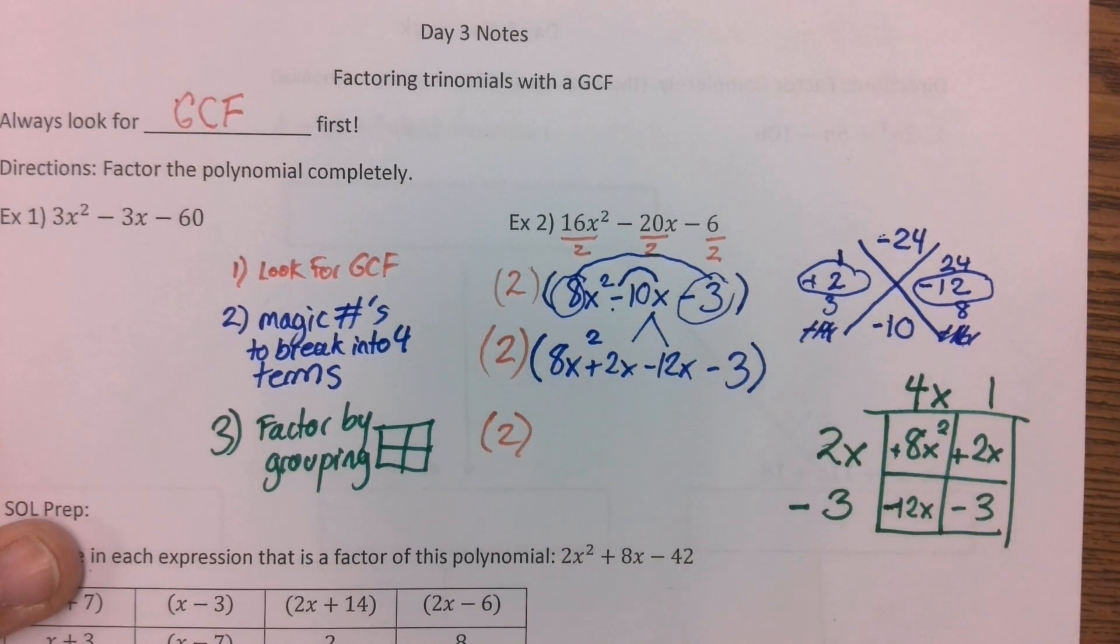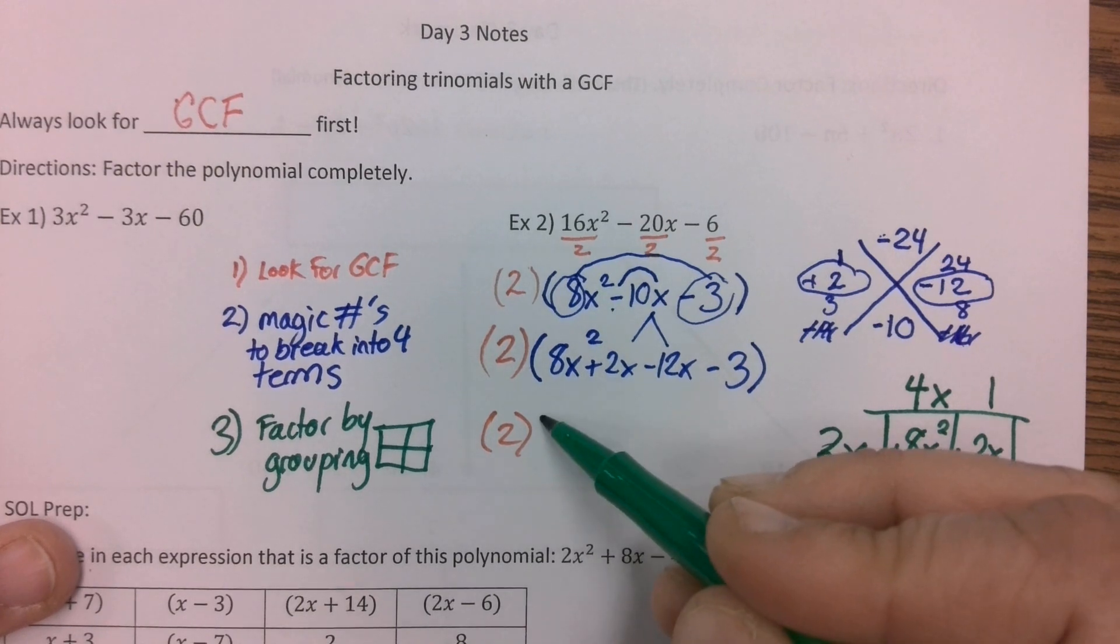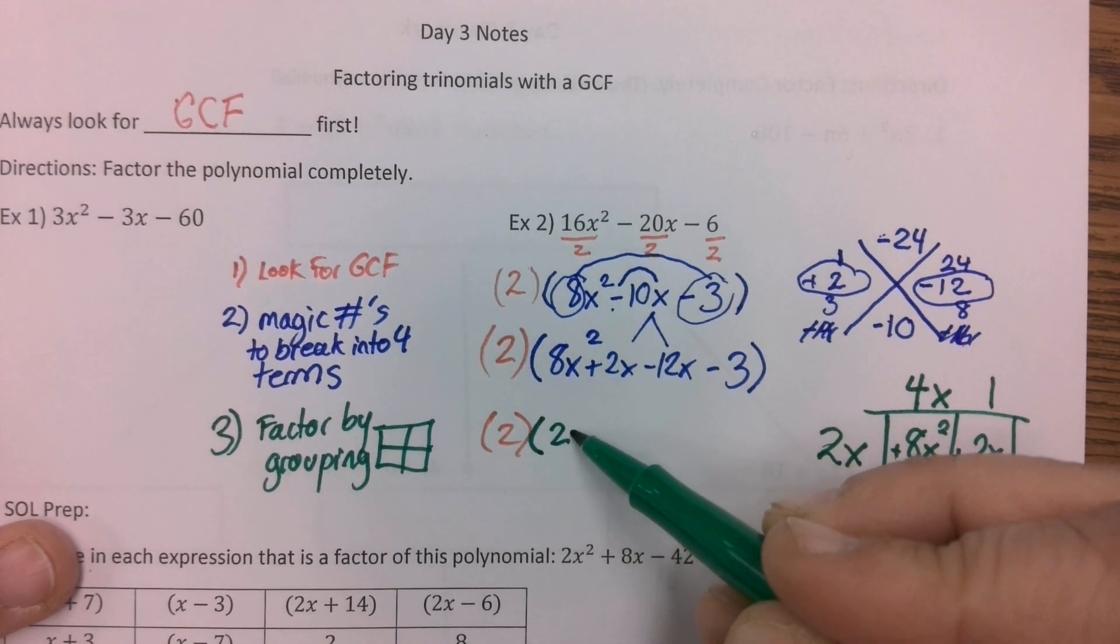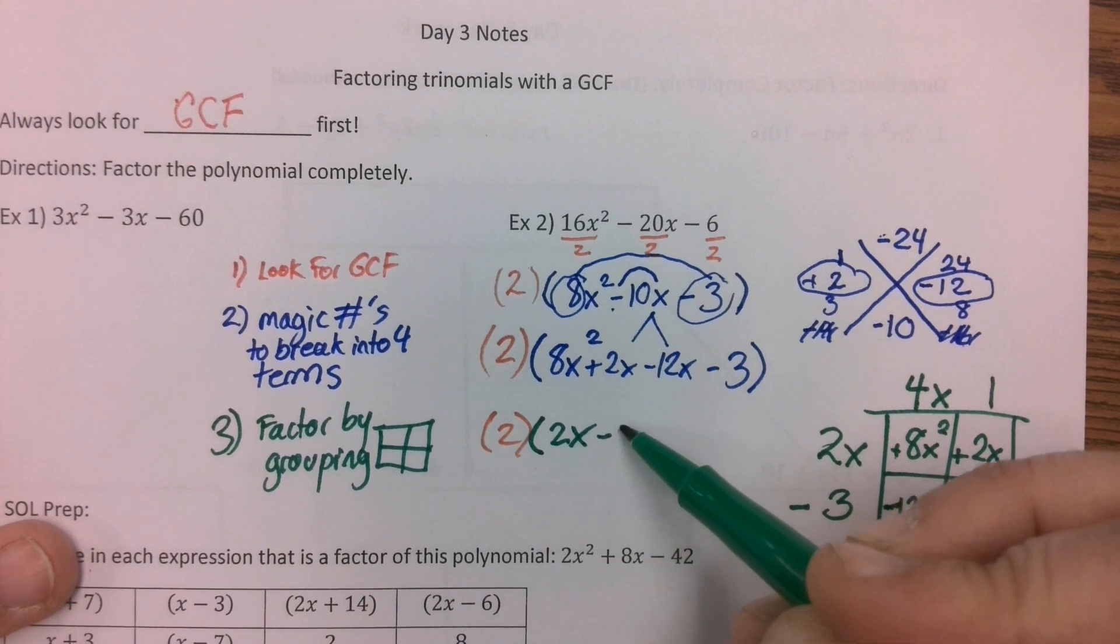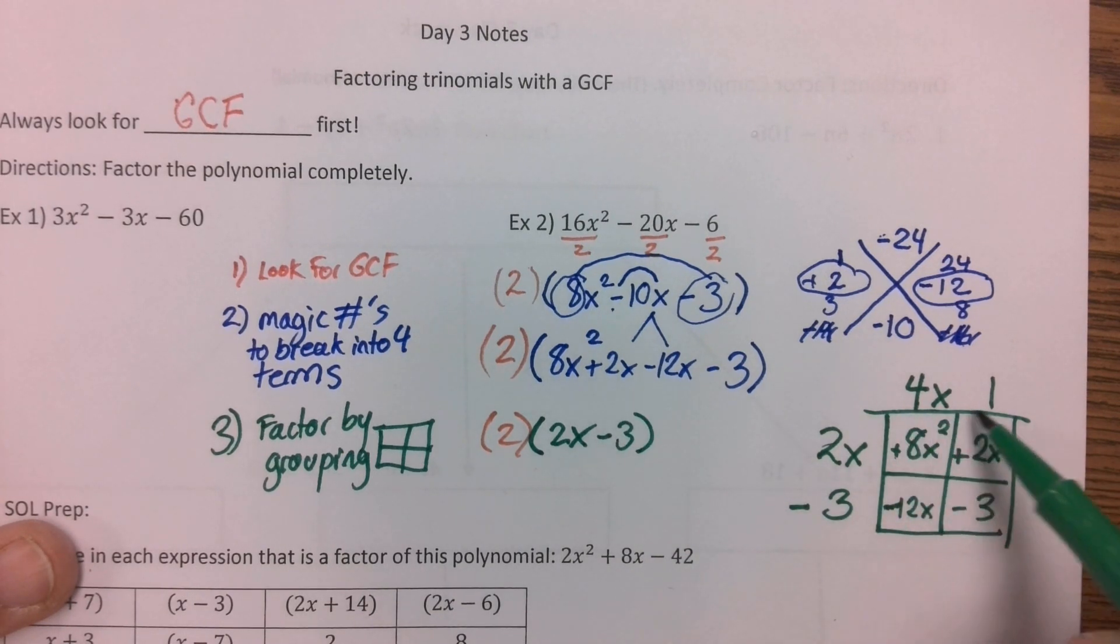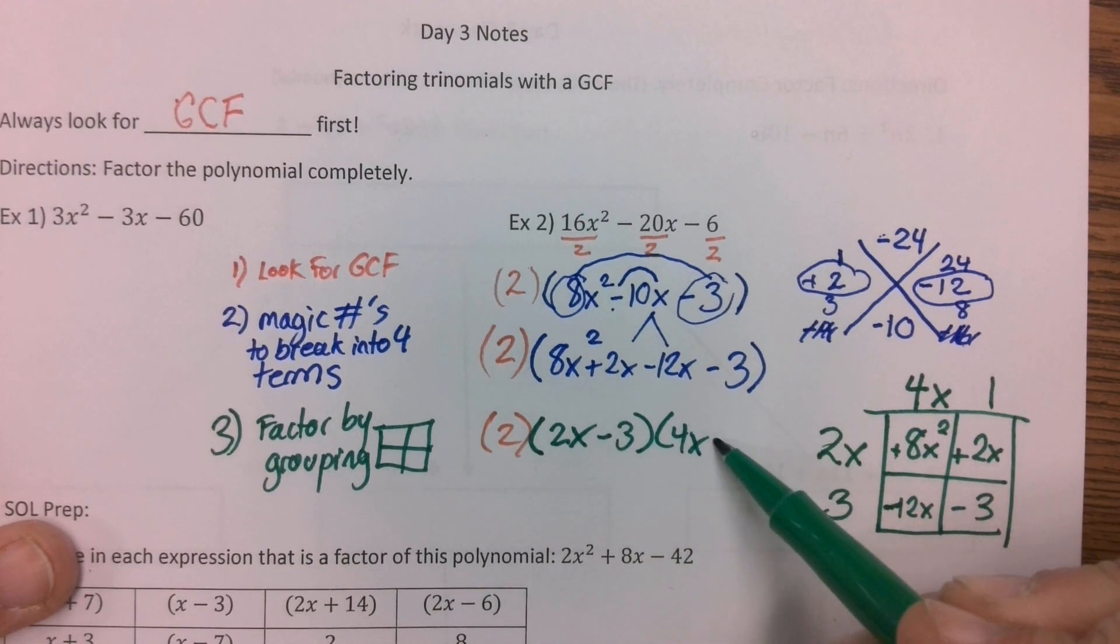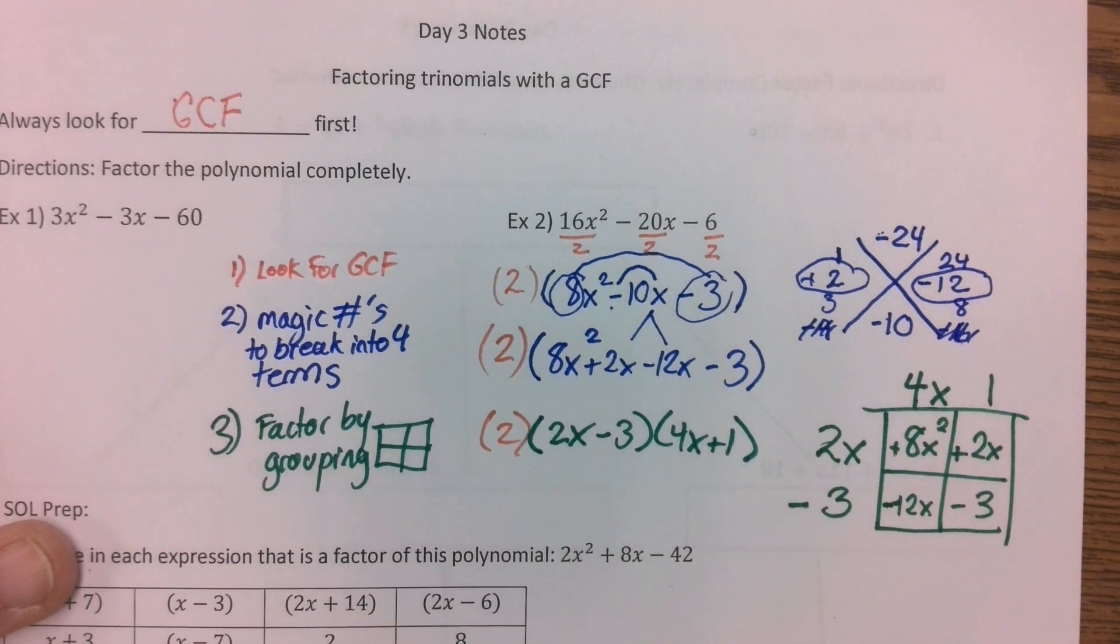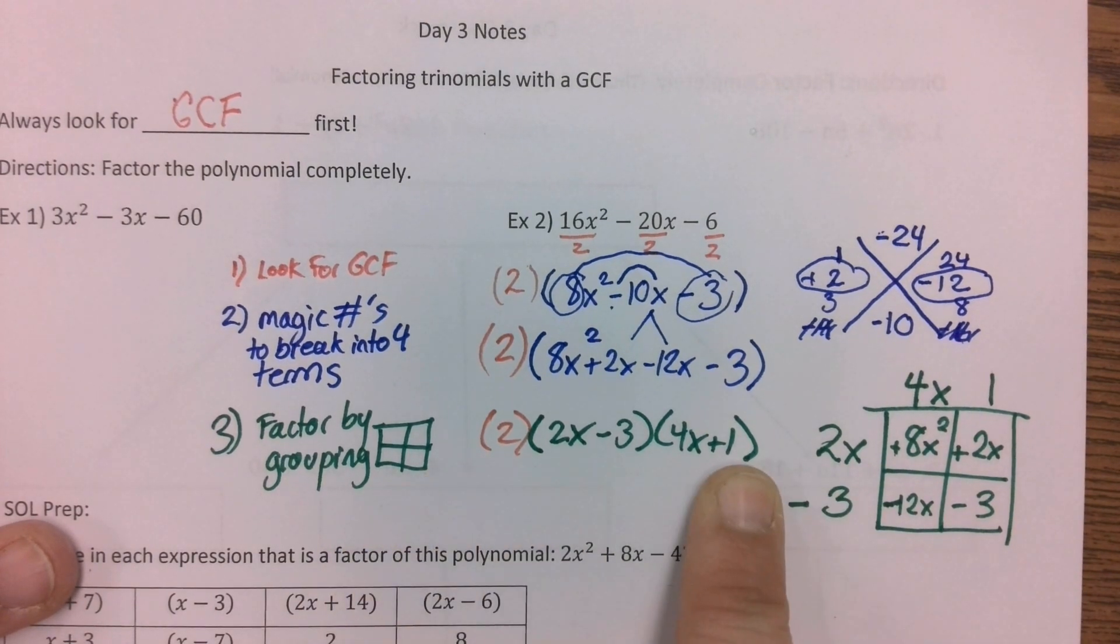So now my final answer, including all three of my factors, is the 2 that we found at the beginning. My second factor is along here, 2x minus 3. And my third factor is 4x plus 1. Okay? So hopefully that's what you got as well.